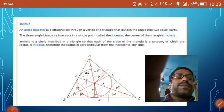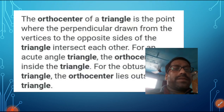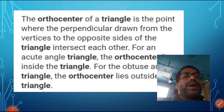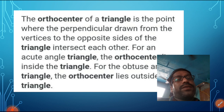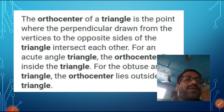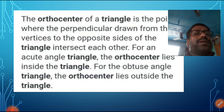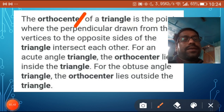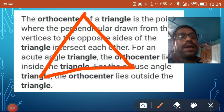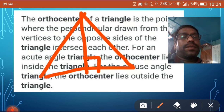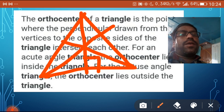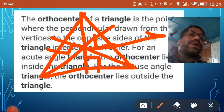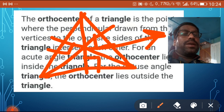Then we have the orthocenter of a triangle. The orthocenter is the point where perpendiculars drawn from the vertex to the opposite sides of the triangle intersect each other. If this is the triangle, these lines are perpendicular — we can also call them altitudes. This meeting point is called the orthocenter of the triangle.